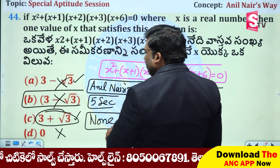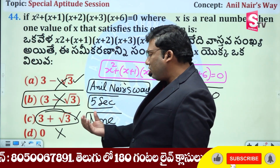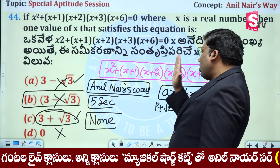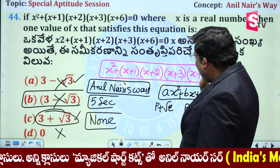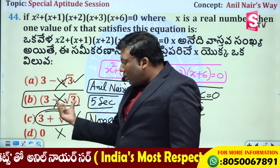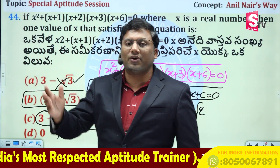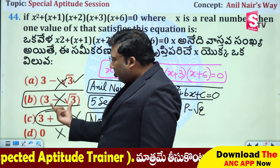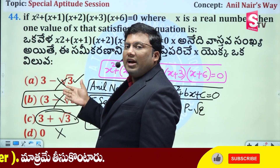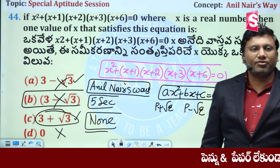The answer is none of these. Why none of these? Let's verify: substituting gives (0+1)(0+2)(0+3)(0+6) = 1 × 2 × 3 × 6 = 36, and 36 ≠ 0. So the equation is not satisfied. By the conjugate root theorem, if A + √B satisfies the equation, then A − √B also satisfies it. So 3 + √3 and 3 − √3 both satisfy — but options B and C are the same. The answer is none of these.